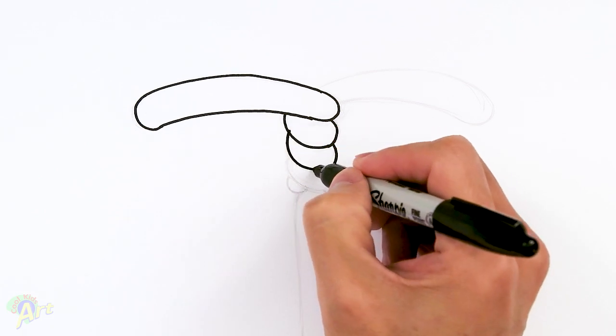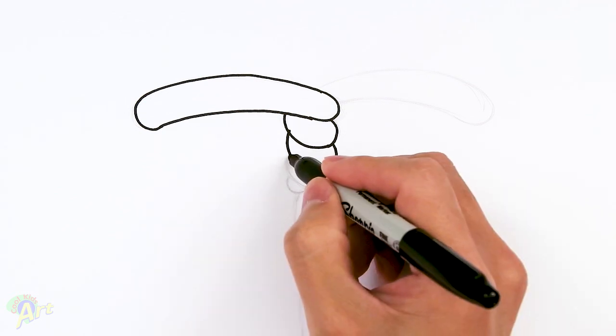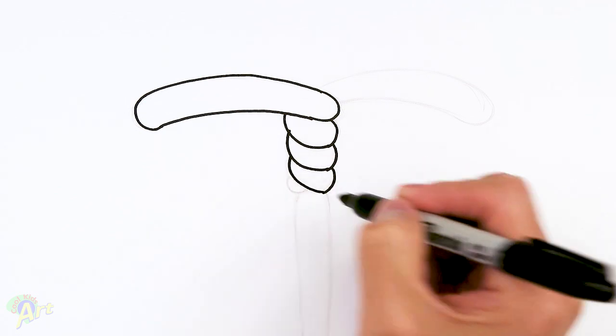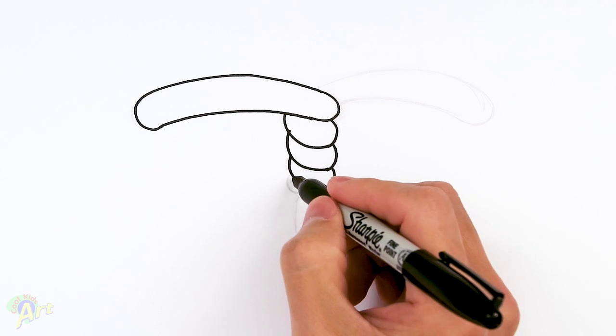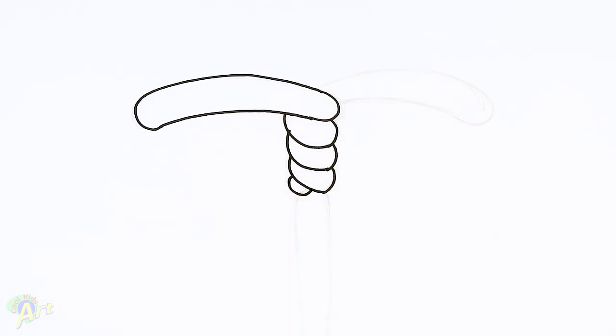Just going to curve it around. And then one more. Come up here. Close it off. And then we're going to add one smaller one here. Okay, so that's going to be the middle and so let's draw in the other side of the axe.